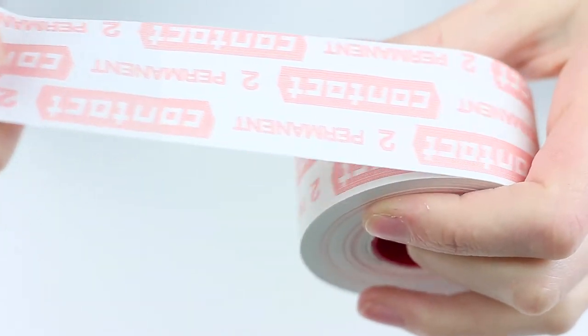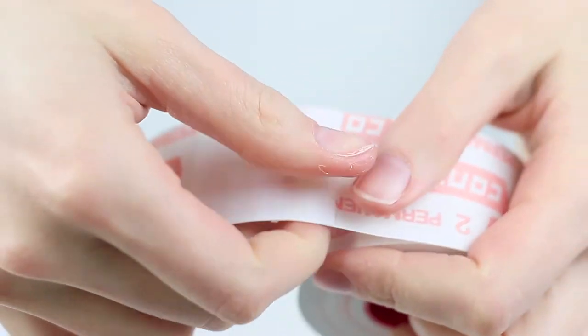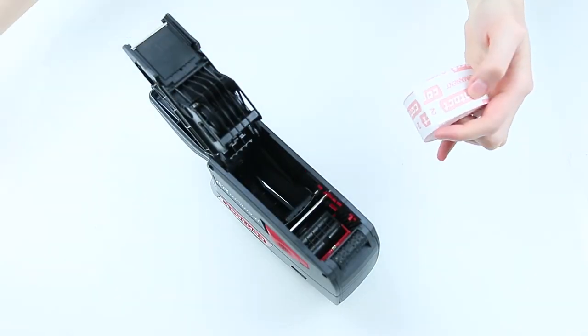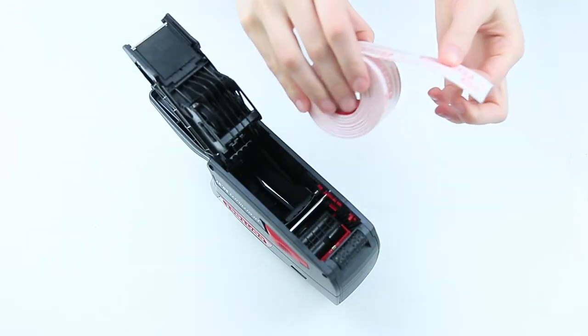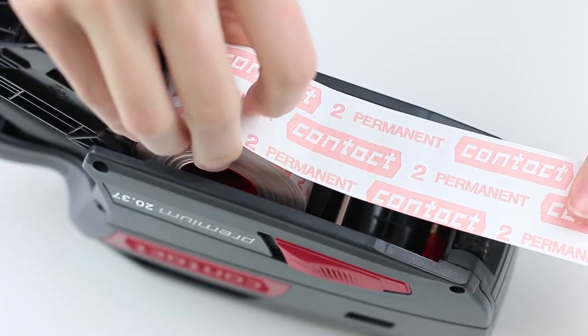Open the label roll and unwrap it far enough so that all labels or adhesive residues are removed. Now, insert the label roll into the labeler. About 10 cm of the material need to stick out.